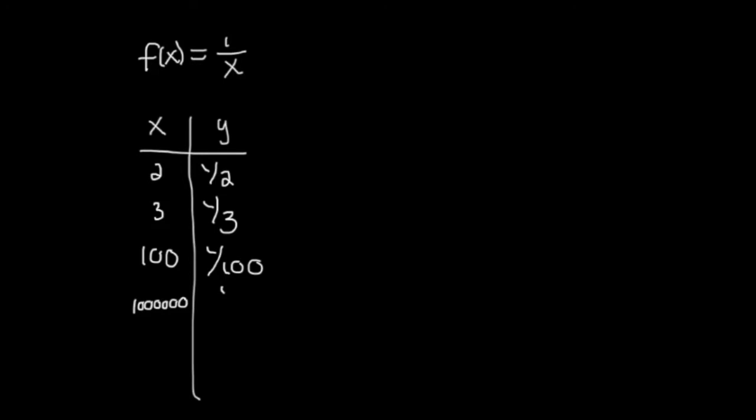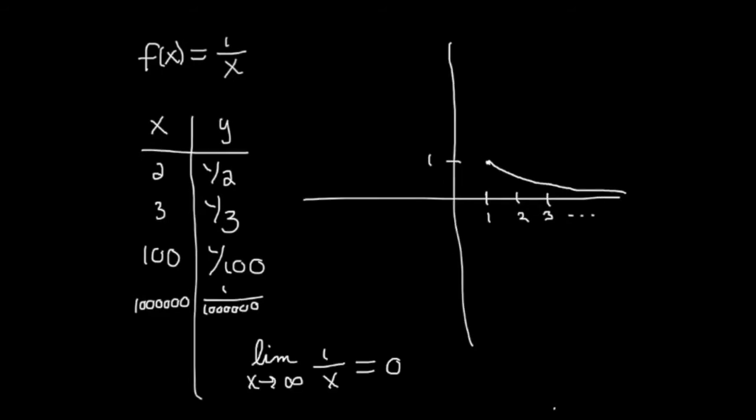If I plug in a million, I get a millionth. As x increases, the y-value decreases down towards zero. The way we say this in limit notation is that the limit as x approaches infinity of the function 1 over x is equal to zero.